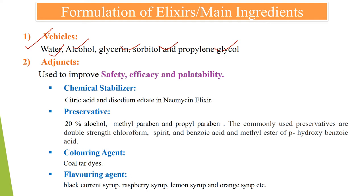Next, adjuvants include chemical stabilizers, preservatives, coloring agents, and flavoring agents. Coal tar dyes are used as coloring agents. As stabilizers, citric acid and disodium edetate are used. As preservatives, 20% alcohol is used.